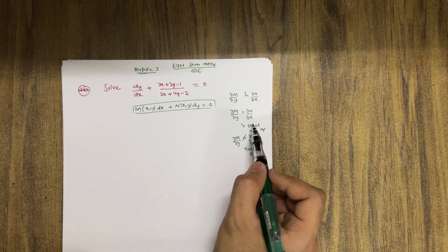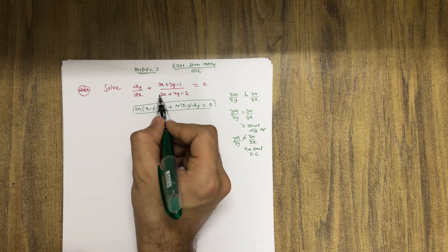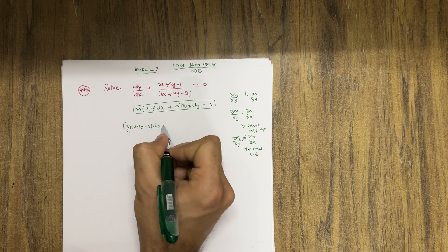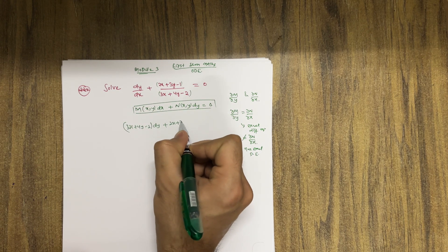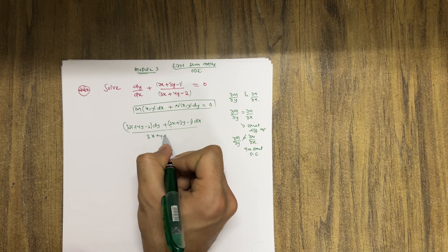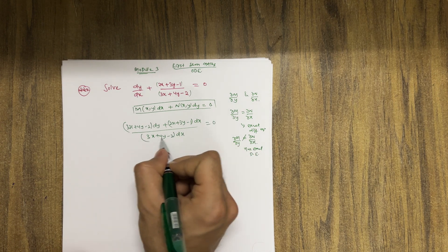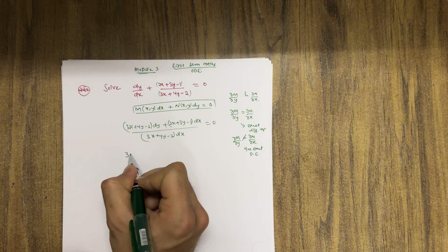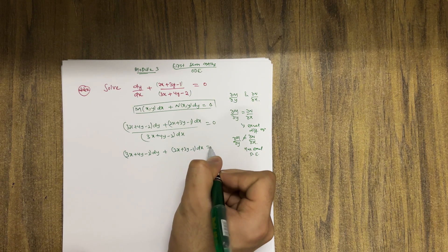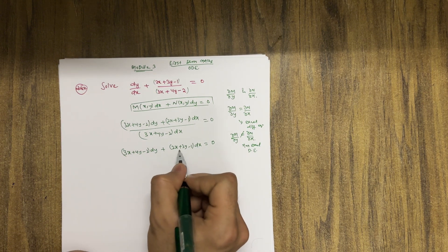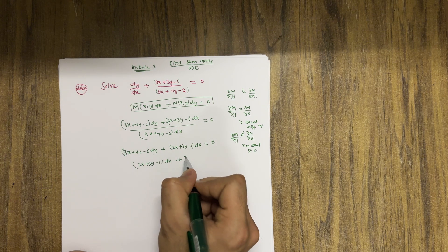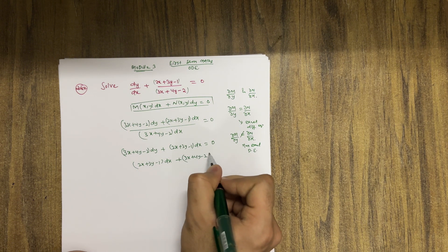Let me check now. Cross multiplying gives: (3x + 4y - 2)dy + (2x + 3y - 1)dx = 0. Taking the term to the right-hand side: (2x + 3y - 1)dx + (3x + 4y - 2)dy = 0. We just reorder this to match the standard form.